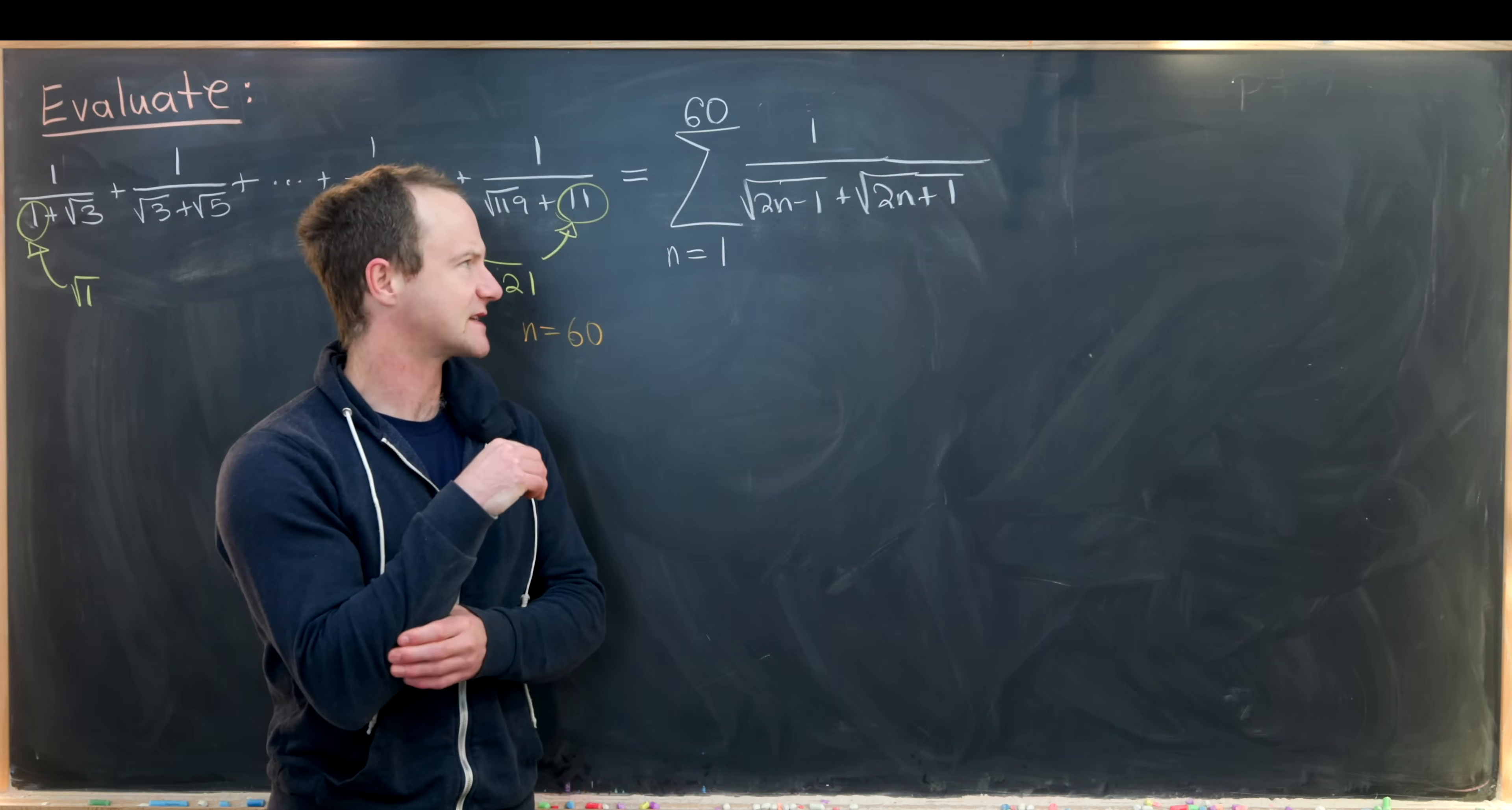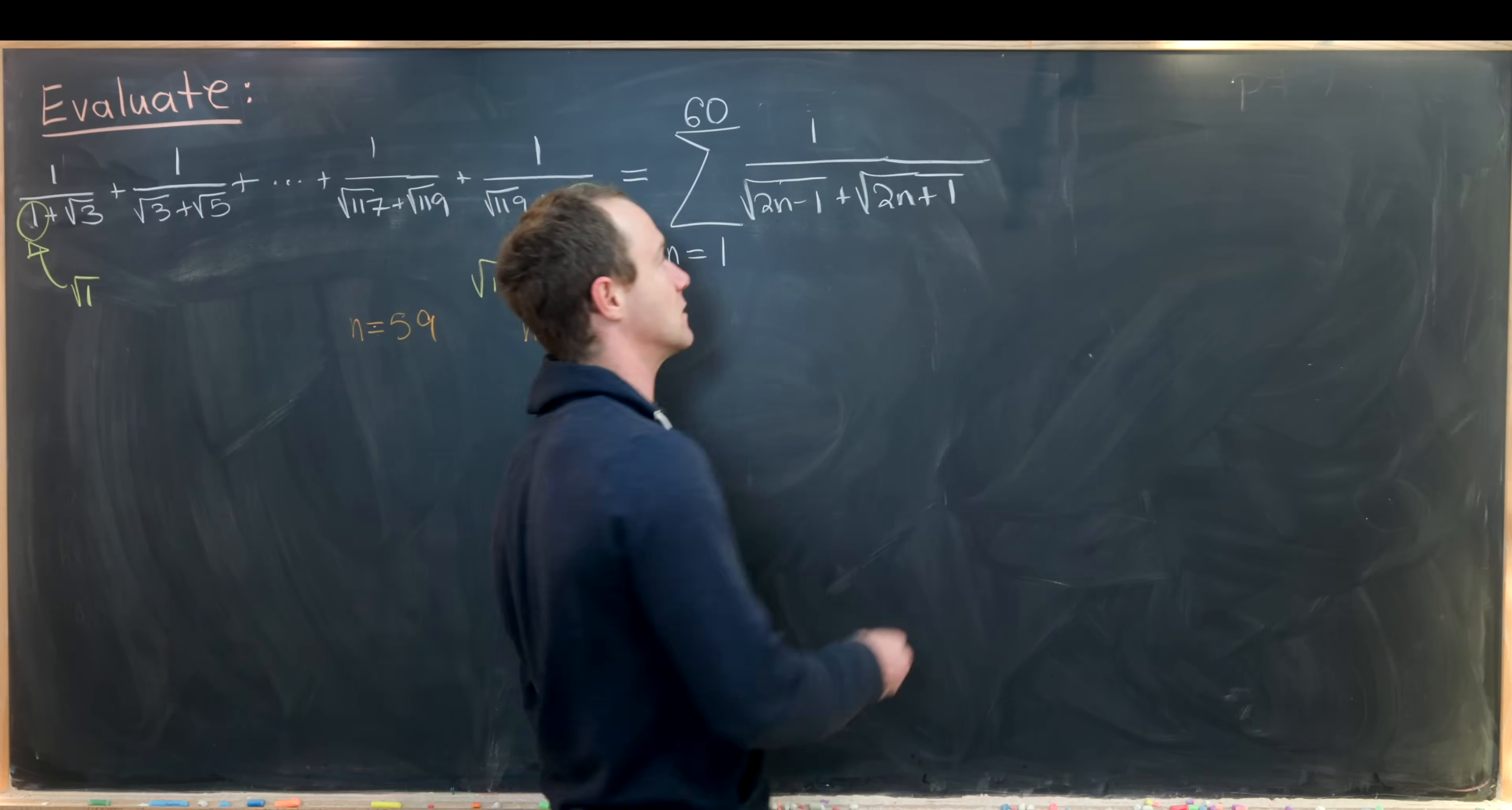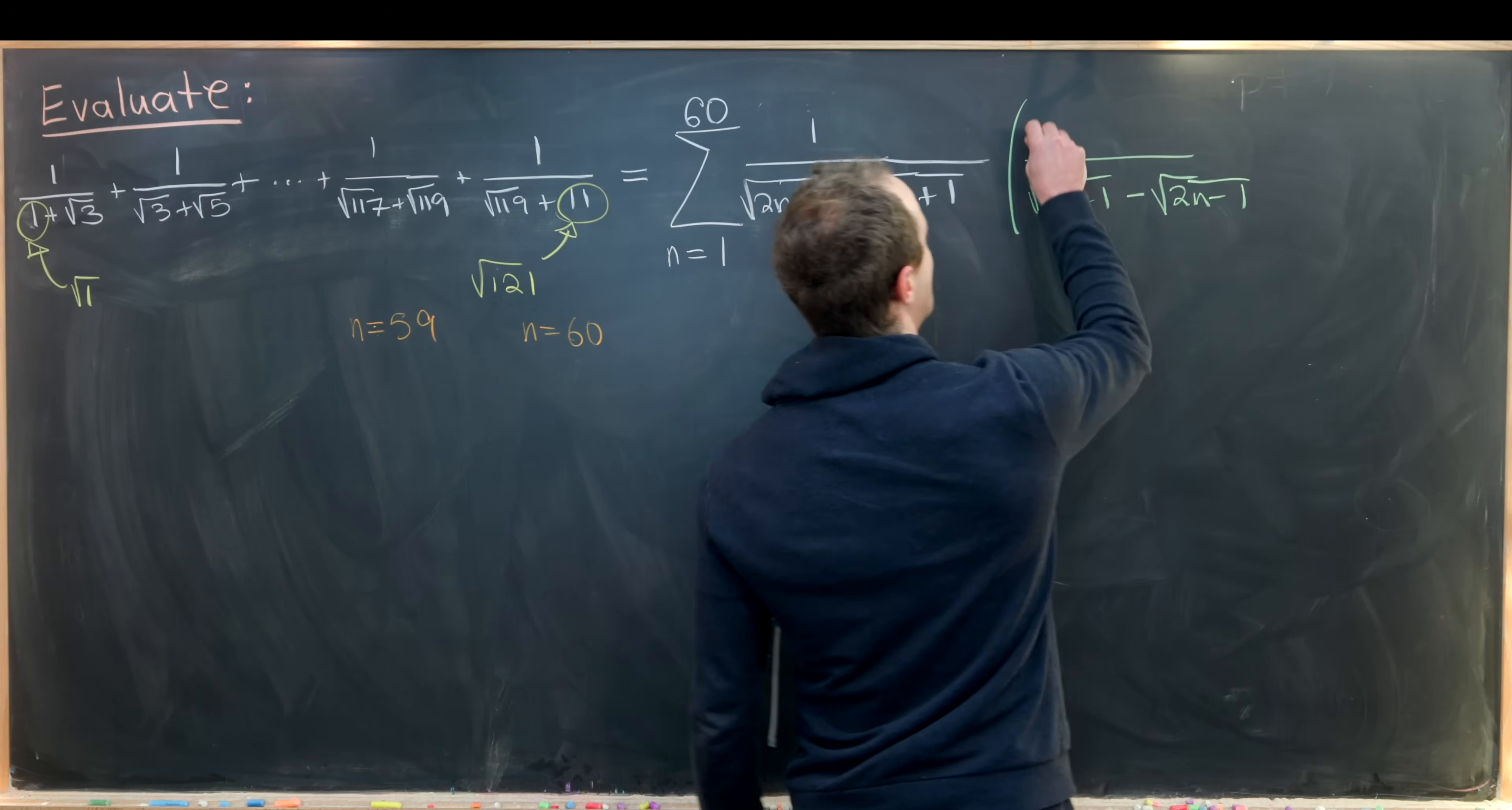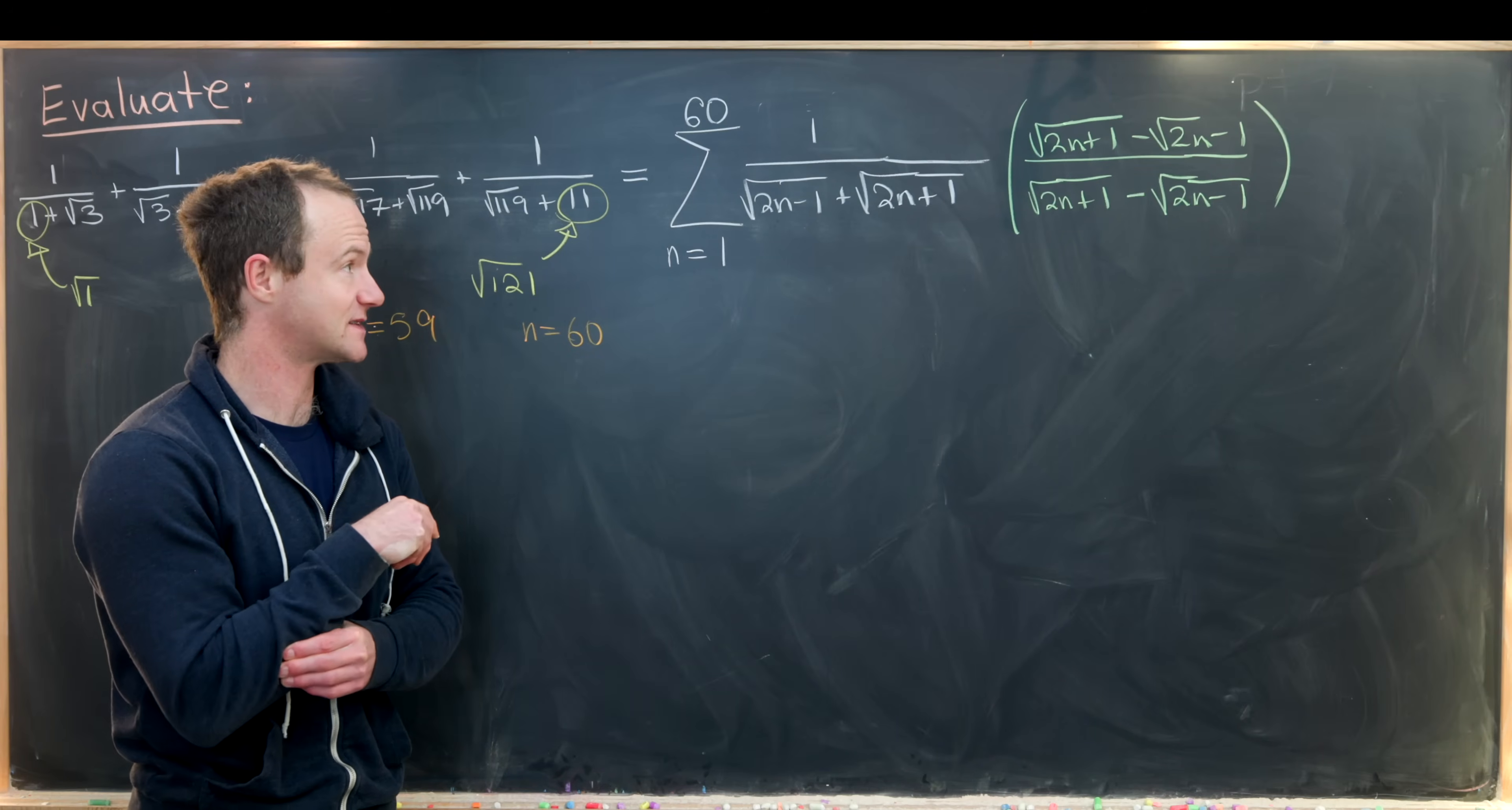What's our next step? We'd like to rationalize the denominator. We can do this by multiplying by the radical conjugate: √(2n+1) - √(2n-1) in both numerator and denominator. I'm doing it in this order so the largest one is first and I don't have to worry about a trailing minus sign.